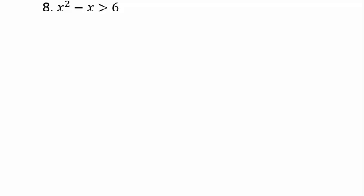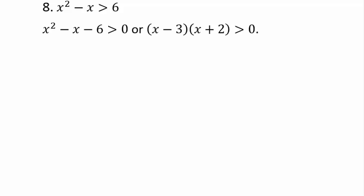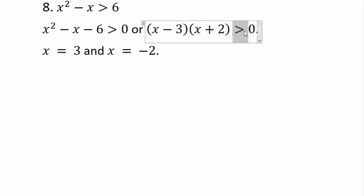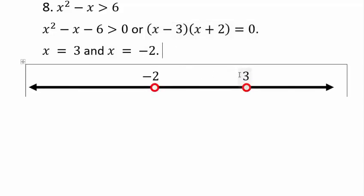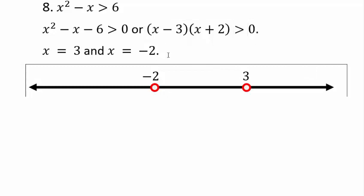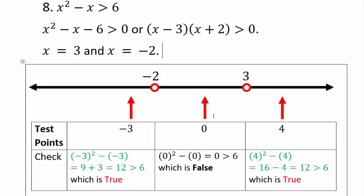Let's solve the inequality x squared minus x greater than 6. Rewrite as x squared minus x minus 6 greater than 0. Factoring and solving the equation equal to zero, changing the inequality to an equals sign, gives x equals 3 and x equals negative 2 as critical points. Plot negative 2 and 3 on a number line; they cannot be included because we want strictly greater than 0. Now pick test points: one below negative 2, one between negative 2 and 3, and one beyond 3 — we'll pick negative 3, 0, and 4.